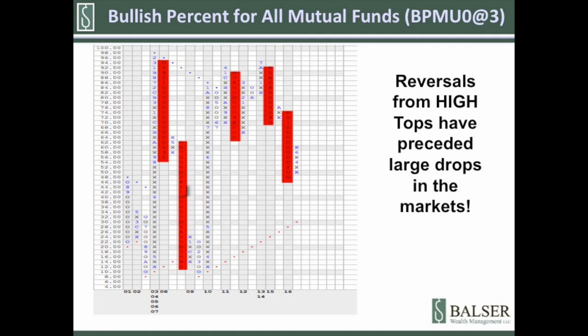This chart has an uncanny ability to foreshadow big losses in the markets. In July of 2008, this indicator reversed into a lower column of O's from a higher top with two sell signals. August of 2011, it reversed from a higher top when the U.S. was in their debt crisis. Then in August of 2015, another column changed and two sell signals. We're currently seeing this indicator move positive, and that's a good thing. The bullish percent for all equity funds is a pretty good long-term indicator.